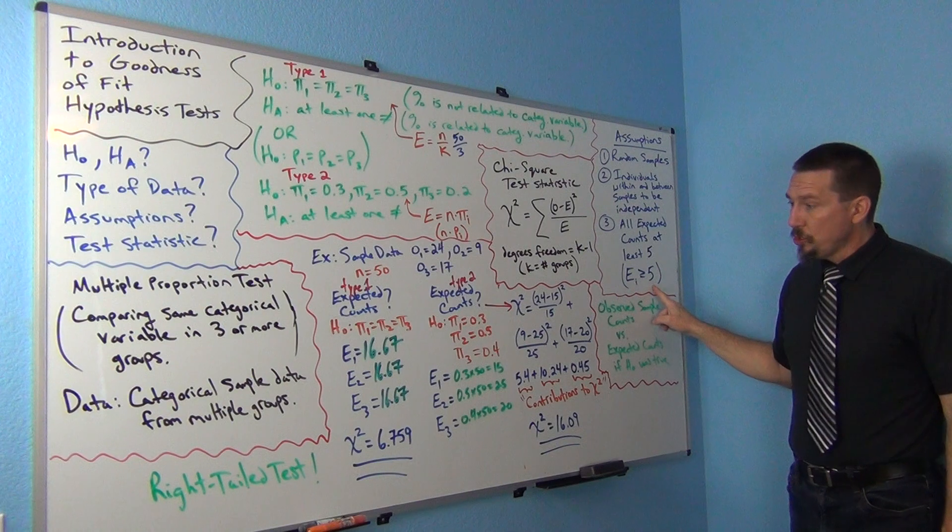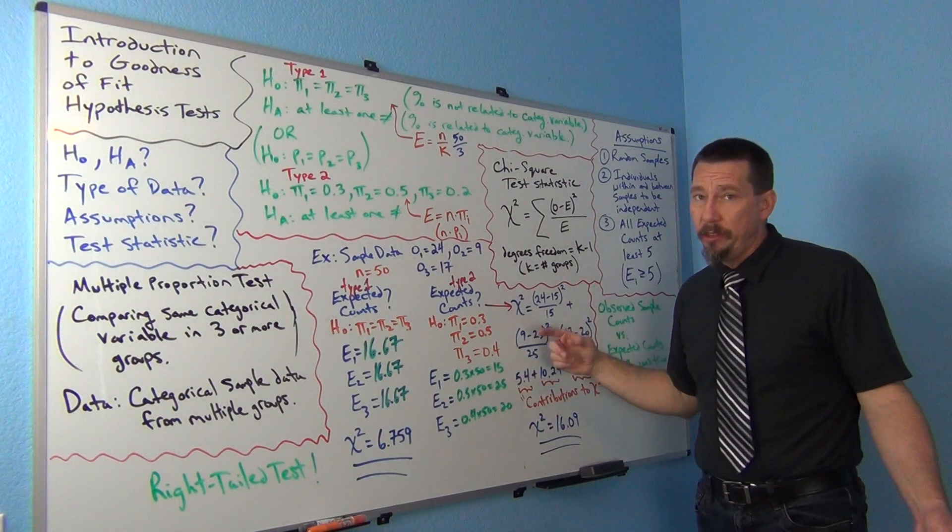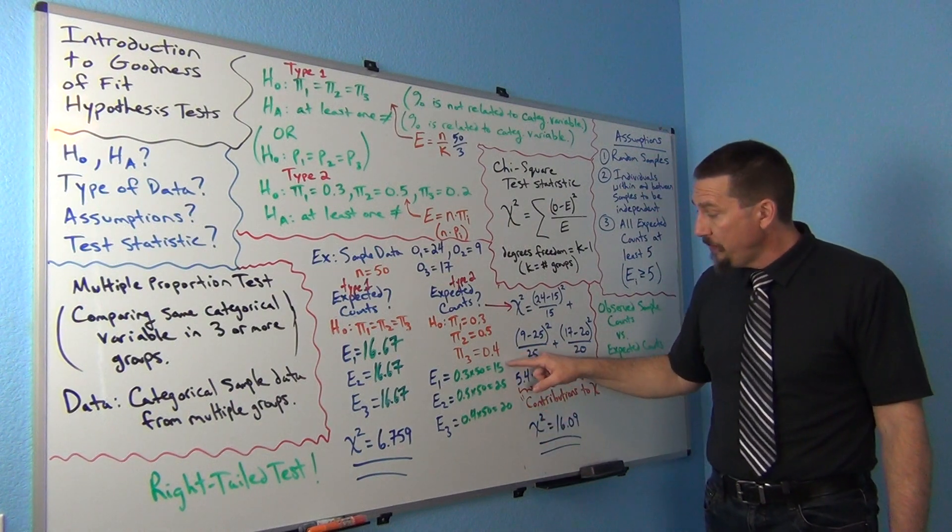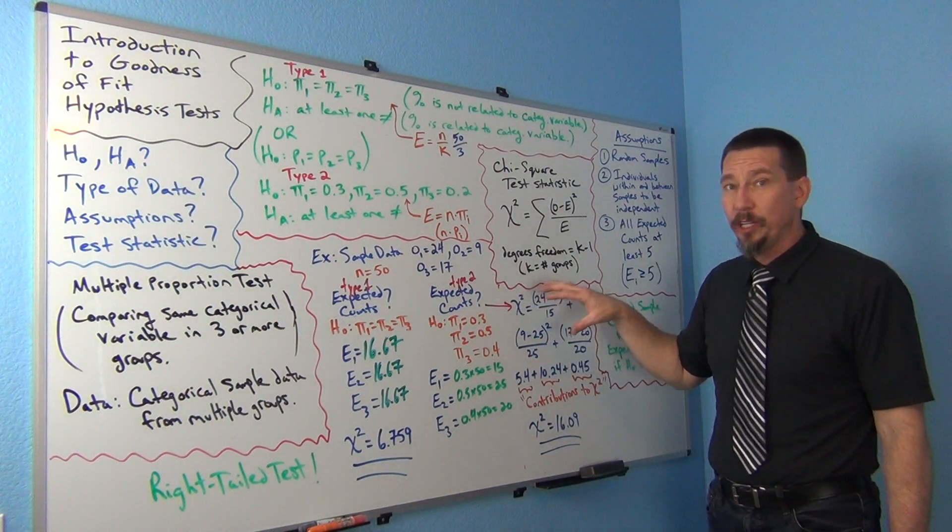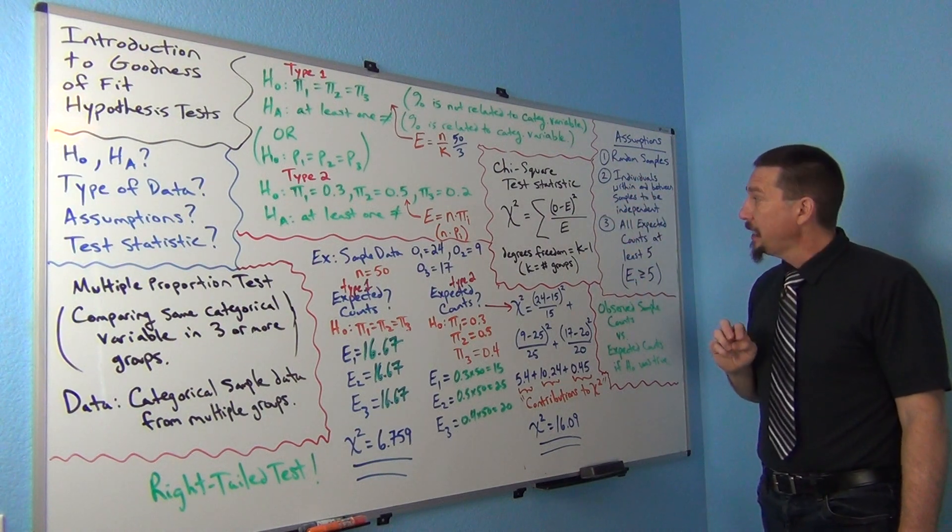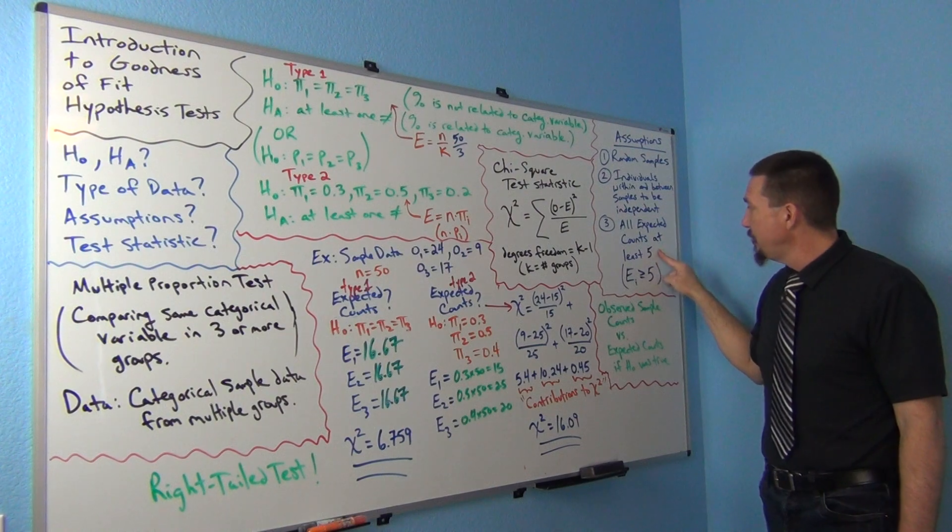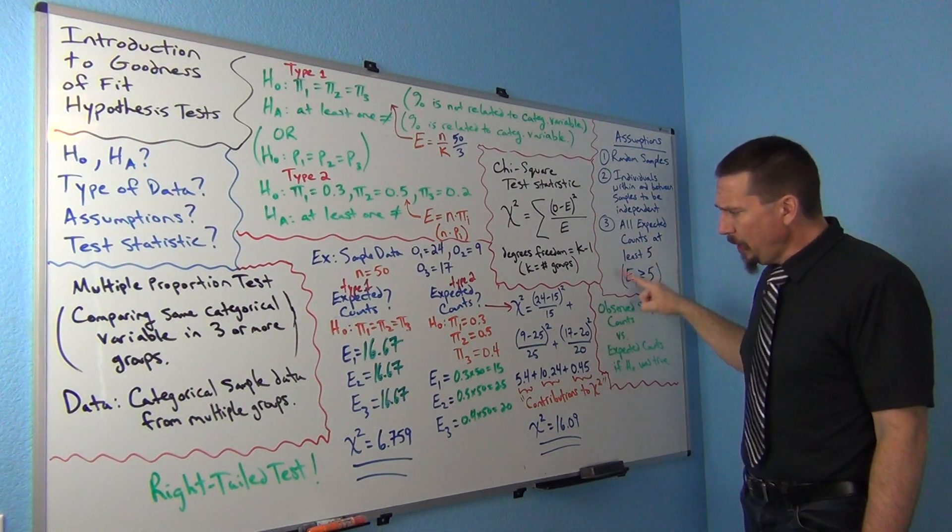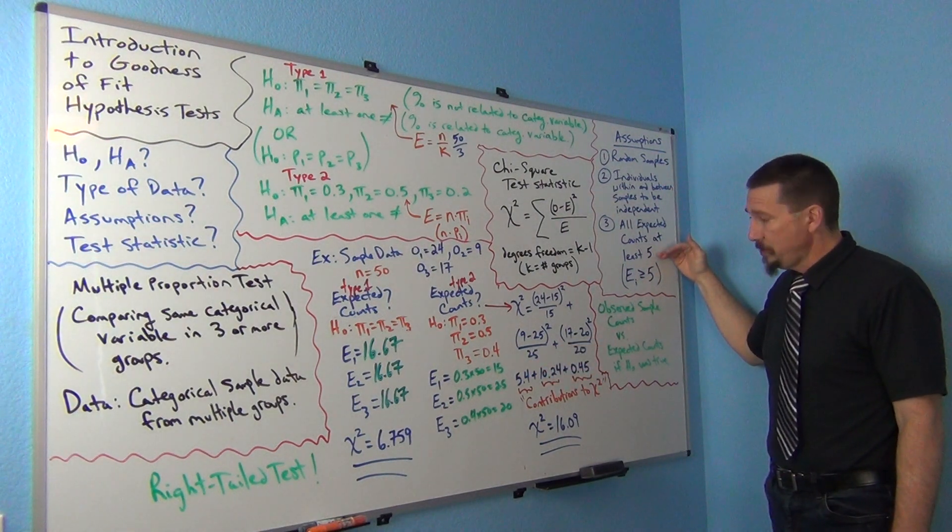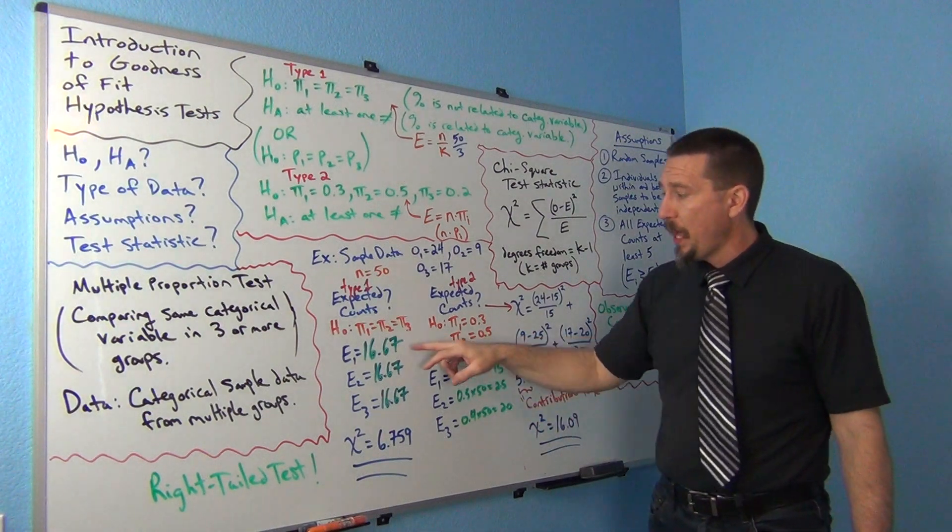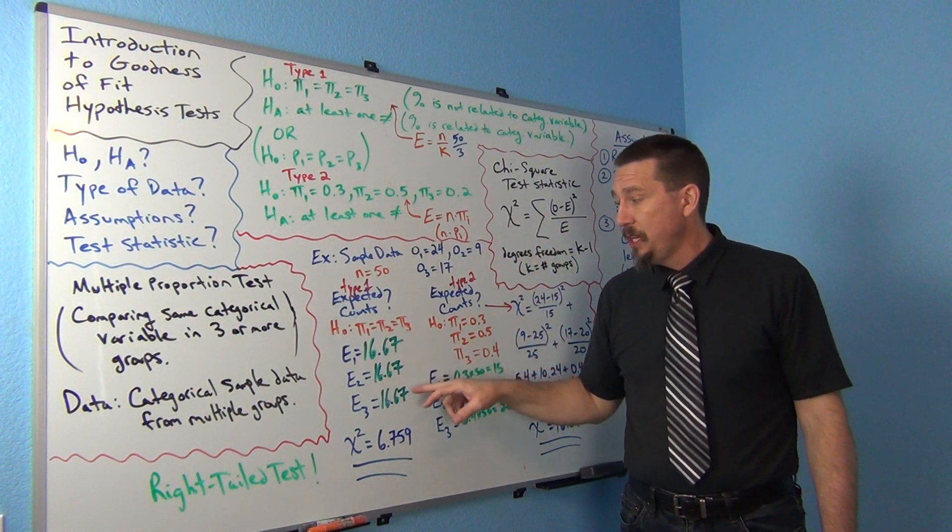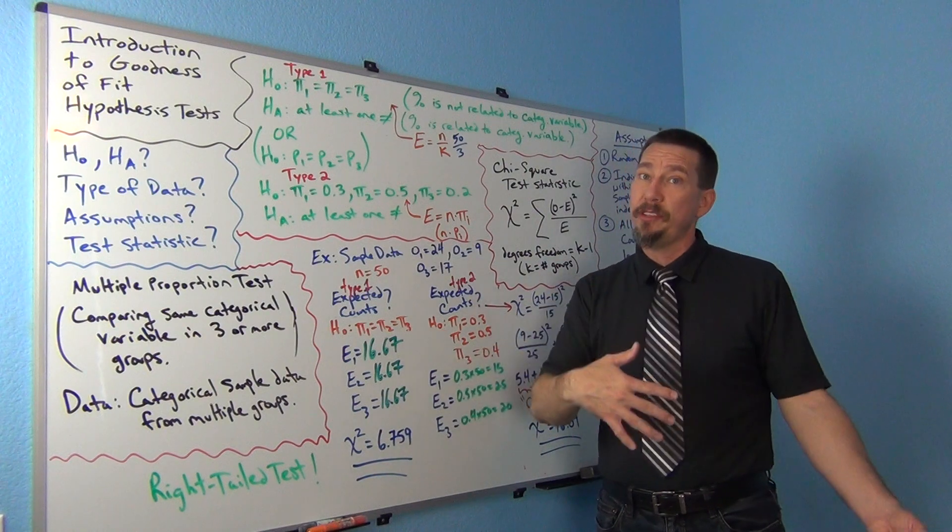So when you get your expected values, the computer will calculate all this. It'll give you the contributions to chi-square. It'll also give you expected counts because it knows you need to check them. If any of these drop below five, this test doesn't fit really well with the way we're doing this. If you're doing the traditional chi-squared calculation, you really need the expected counts to be at least five. All right, so random, independent, expected counts at least five are our assumptions. By the way, if any of the expected counts drop below five, a lot of times computer programs will give you an error message. Always pay attention to those error messages like your sample size is too small for you to handle this test. That's usually what the computer will say.